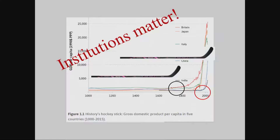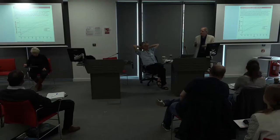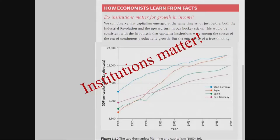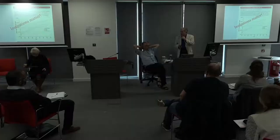We immediately then ask them: how could we actually determine whether institutions matter? So we introduce a natural experiment comparing East and West Germany, and work them through a process by which a question as difficult as 'do institutions really matter' can be answered using actual data. They get the point, but now they're getting an extra point — which is that sometimes we can actually nail down how much it mattered.